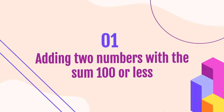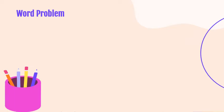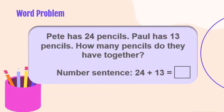First lesson is adding two numbers with a sum of 100 or less. Word problem: Pete has 24 pencils. Paul has 13 pencils. How many pencils do they have together? Number sentence: 24 plus 13 equals blank.